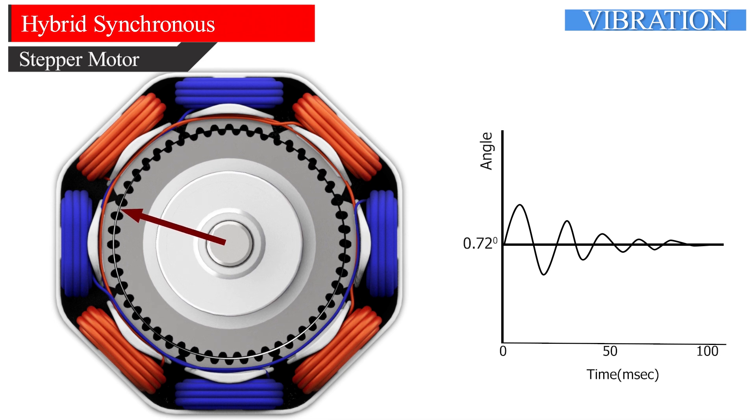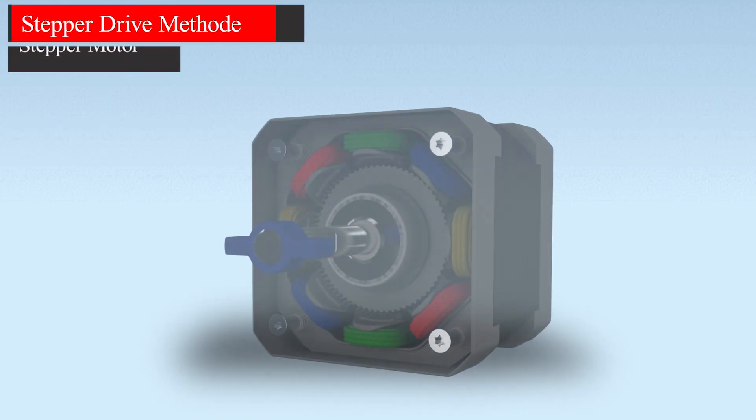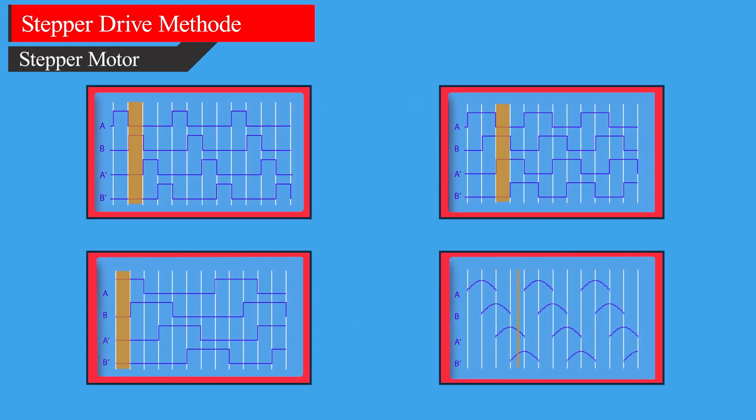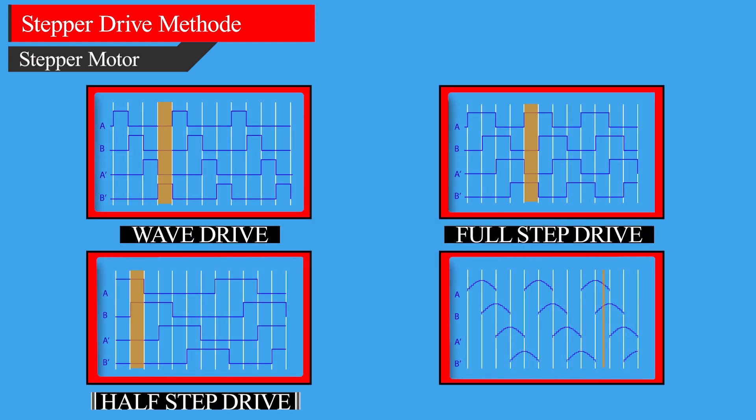The next thing we must mention is how to control the stepper motor with stepper drives. There are several different ways of driving the stepper motor. Four commonly used excitation modes for stepper motors are wave drive, full-step drive, half-step drive, and micro-stepping. These excitation modes have an effect on both the running properties and torque that the motor delivers.